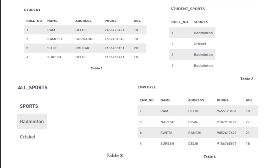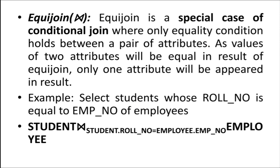First is equi join. Equi join is a special case of conditional join. Equi join displays the pair of attributes where only the equality condition holds. The values of the two attributes will be equal in the result. Equi join takes two attributes, compares their values, and if the values are equal, only then it displays the result — and only one attribute is displayed.